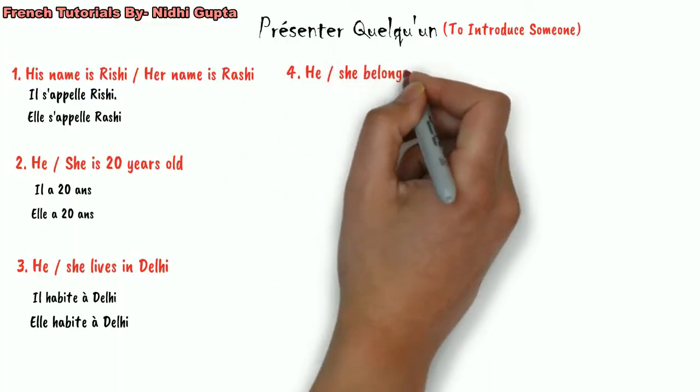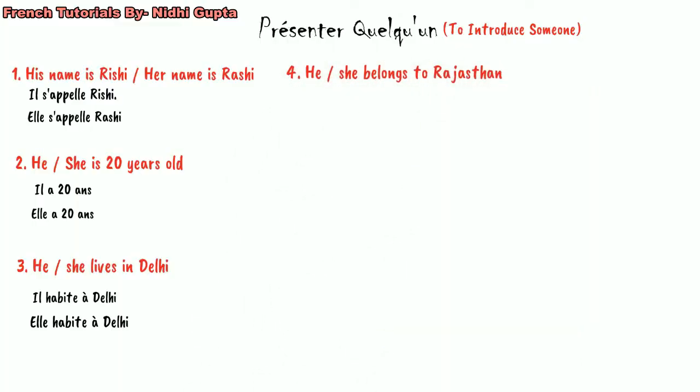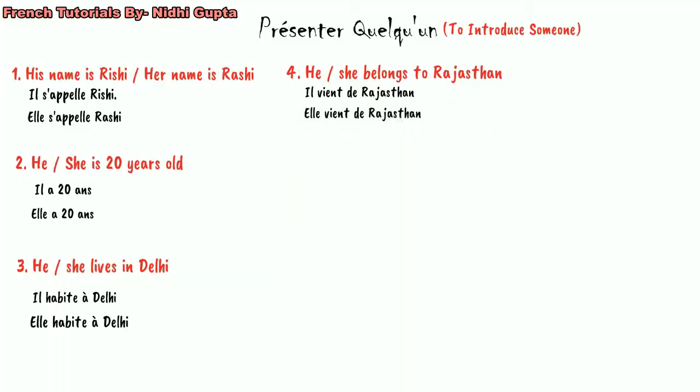The fourth thing is where someone belongs to or comes from. If Rishi doesn't belong to Delhi and comes from Rajasthan, we would say 'il vient de Rajasthan.' Similarly, if Rashi is from Rajasthan, we would say 'elle vient de Rajasthan.' This is how we show someone's belonging to a city or state.